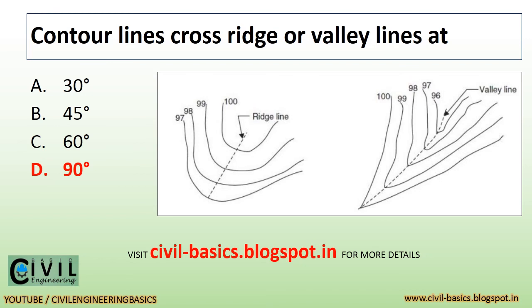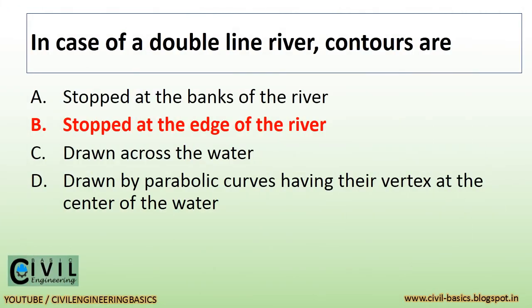Contour lines cross ridge or valley lines at 90 degrees. You can see the ridge line crossing at 90 degrees to contour lines in the given figure. In case of a double line river, contours are stopped at the edge of the river.